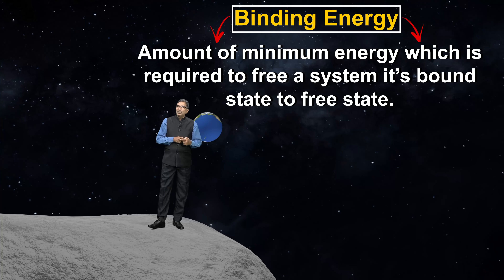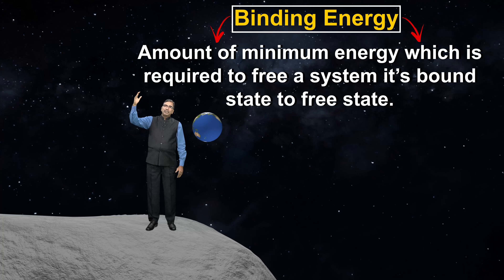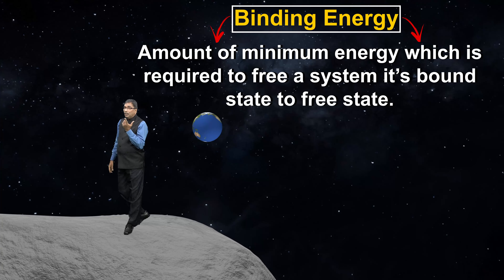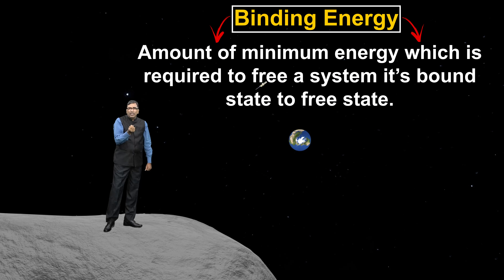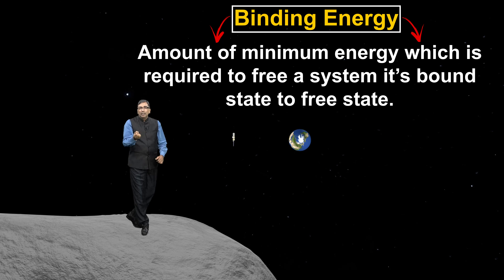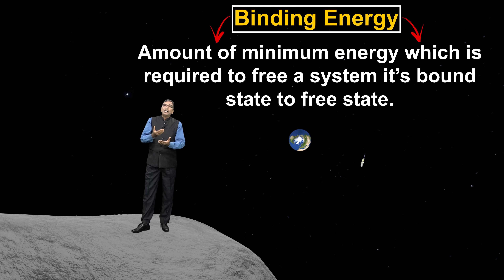If we give at least the binding energy to the satellite, it will go from its orbit to infinity. After reaching infinity, will it ever come back? Think about it — when it reaches infinity, the gravitational pull of Earth on it is zero. If there is no pull towards Earth, why would it come back? It is free now, with no force acting on it, so it will never come back.